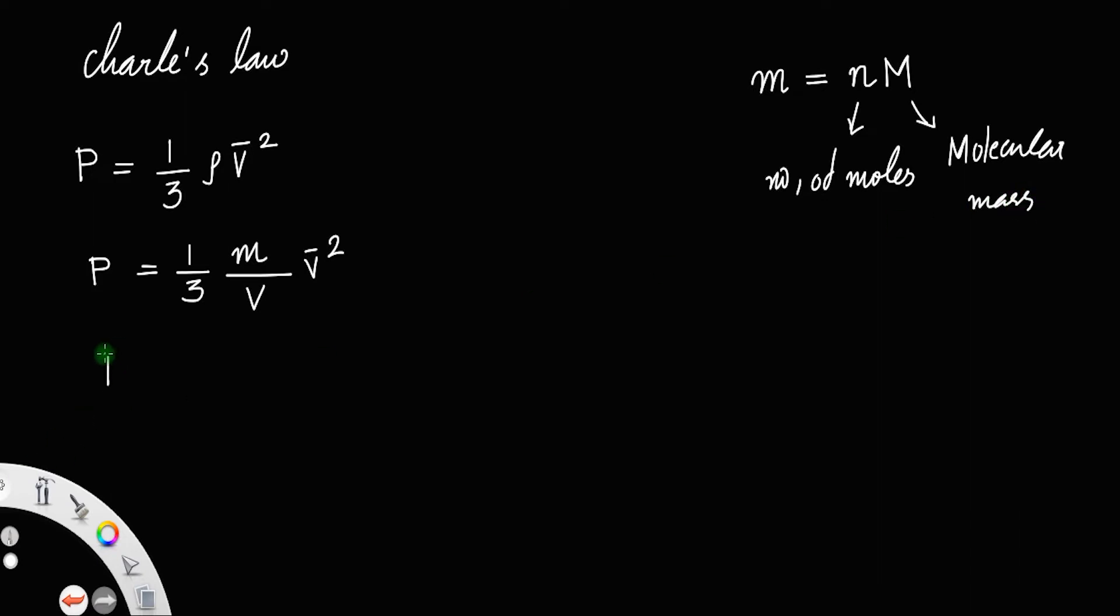Therefore, P is equal to 1 by 3, instead of m you can write nM divided by V into V bar square.